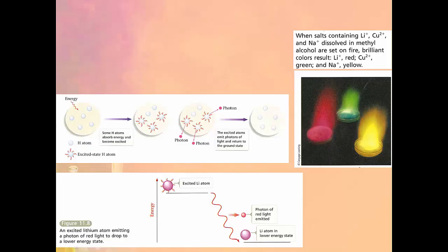This slide shows a practical example where some salts are dissolved in methanol, set on fire, and produce different colors. The reason we see different colors for the lithium, copper, and sodium salts is because the elements are different. When electrons are excited to high energy states and then relax, they produce photons of light associated with a different wavelength, giving a different color of light.